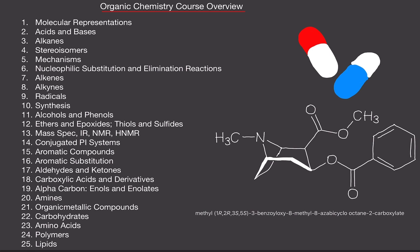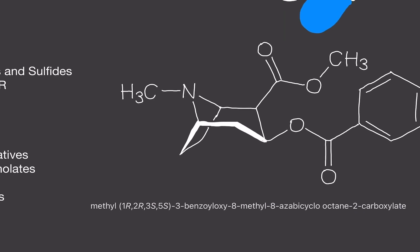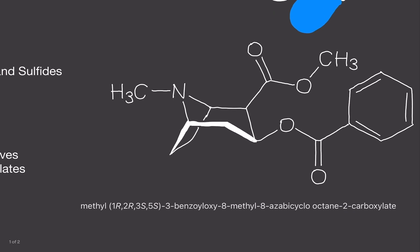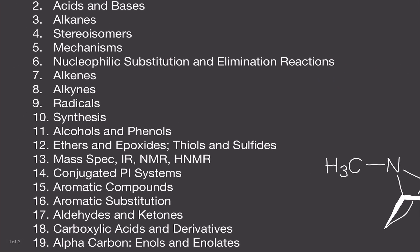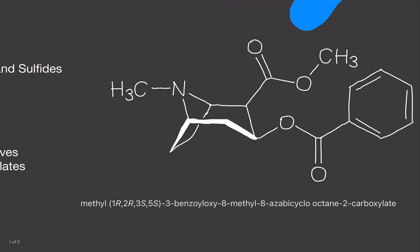Medications are all about organic chemistry. Let's actually look at this molecule here — it looks really complicated. By the end of roughly chapter three, you'll be able to understand this. What is this? Methyl-1R,2R,3S,5S-3-benzyloxy-8-methyl-8-azabicyclo-octane-2-carboxylate. What does all this mean? This is cocaine. I'm not joking — this is cocaine. Cocaine is all about organic chemistry.